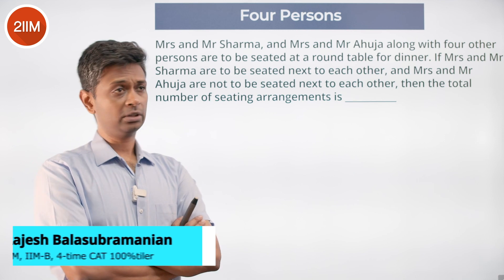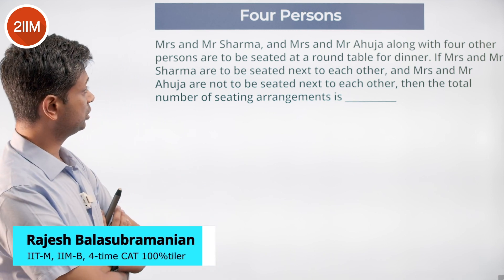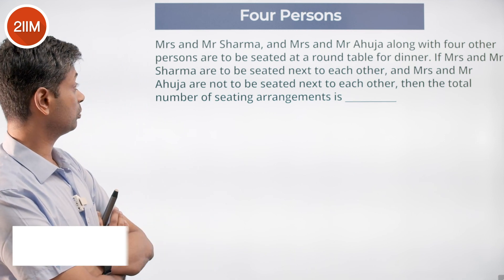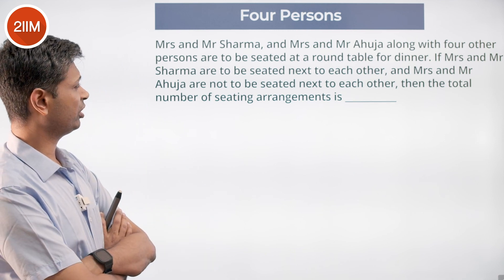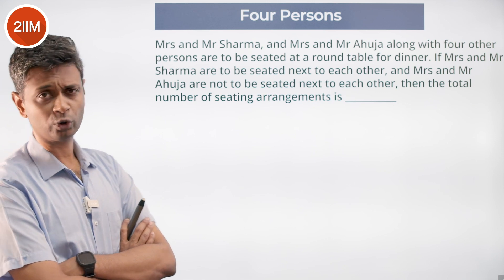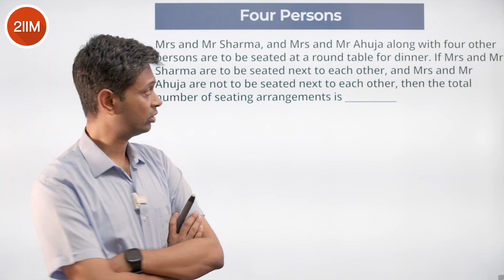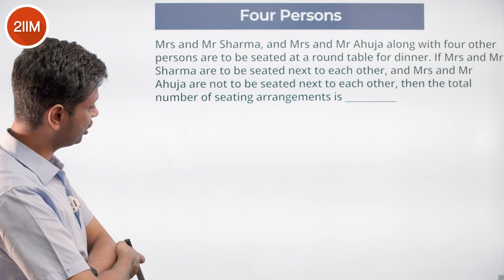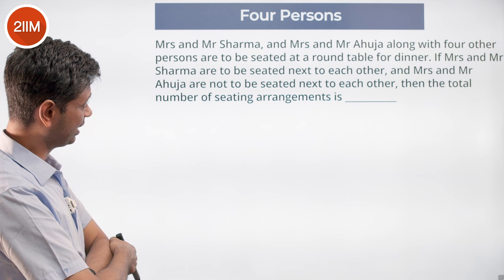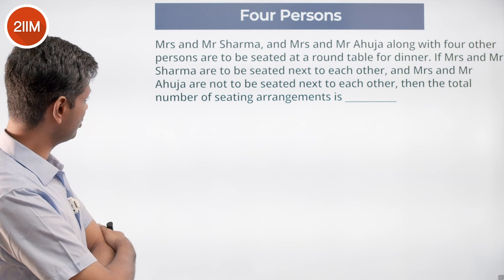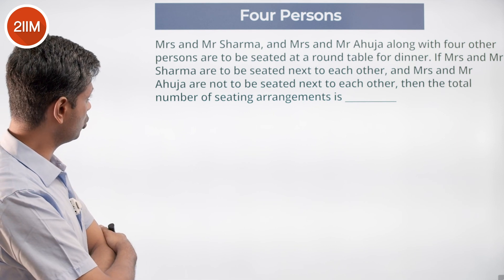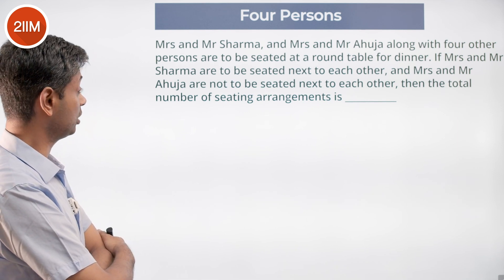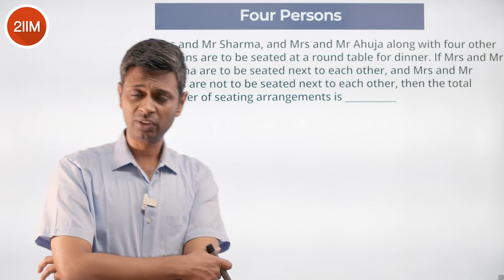Mr. and Mrs. Sharma and Mr. and Mrs. Ahuja, along with four other persons, are to be seated at a round table for dinner. If Mrs. and Mr. Sharma are to be seated next to each other, and Mrs. and Mr. Ahuja are not to be seated next to each other, find the total number of seating arrangements.